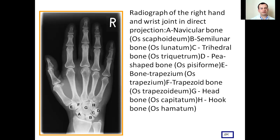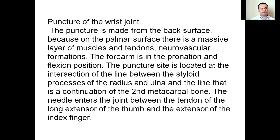Puncture of the wrist joint is made from the dorsal surface because on the palmar surface there is a massive layer of muscles, tendons, and narrow vascular formations. The forearm is in pronation and flexion position. The puncture site is located at the intersection of the line between the styloid processes of the radius and ulna and the line that is a continuation of the second metacarpal bone. The needle enters the joint between the tendon of the long extensor of the thumb and the extensor of the index finger.